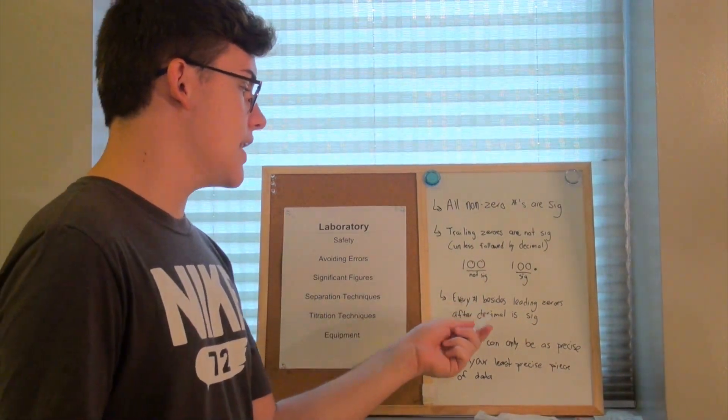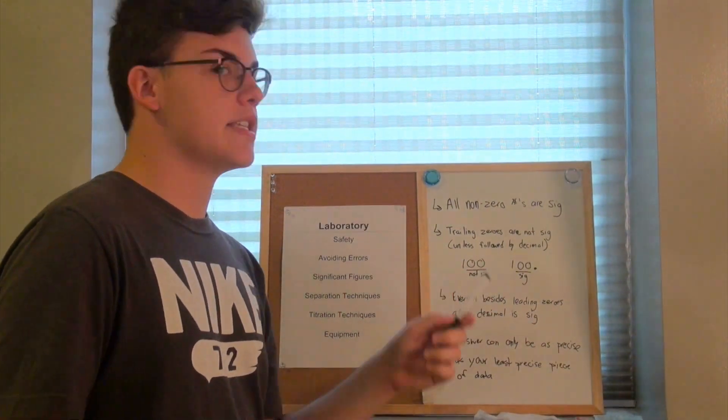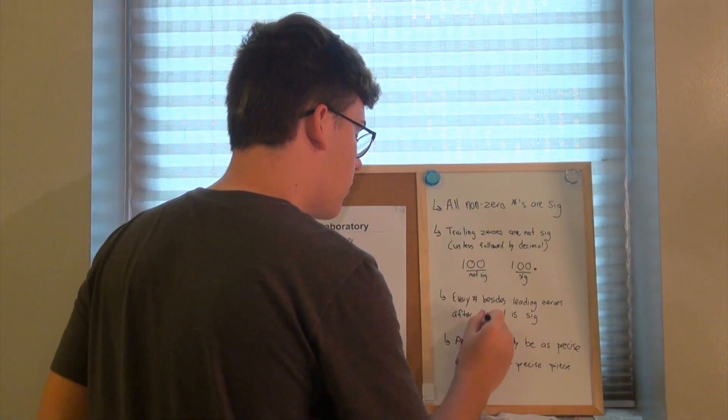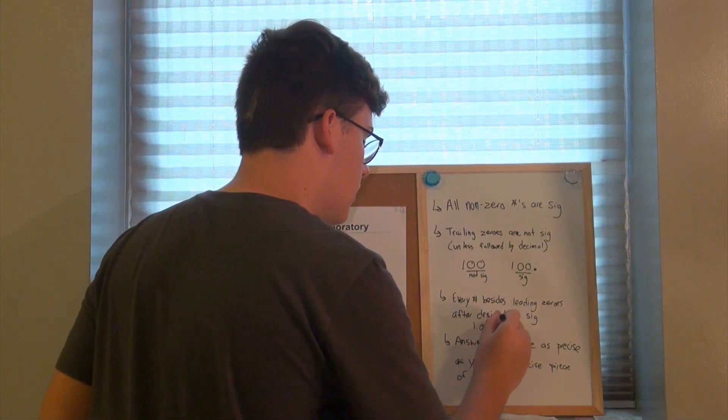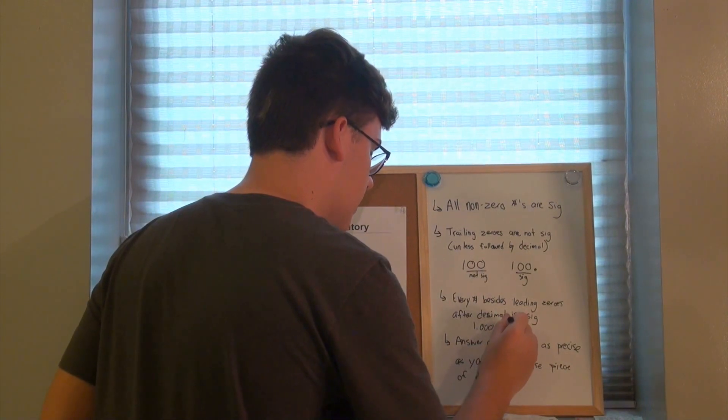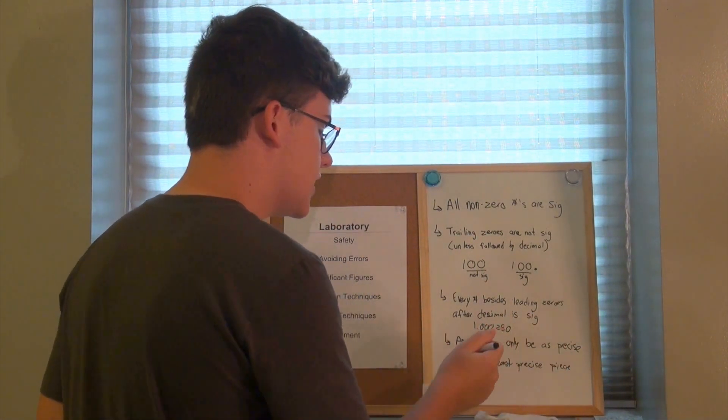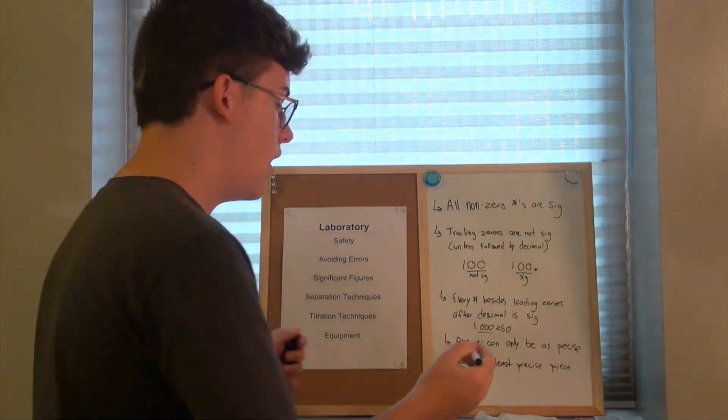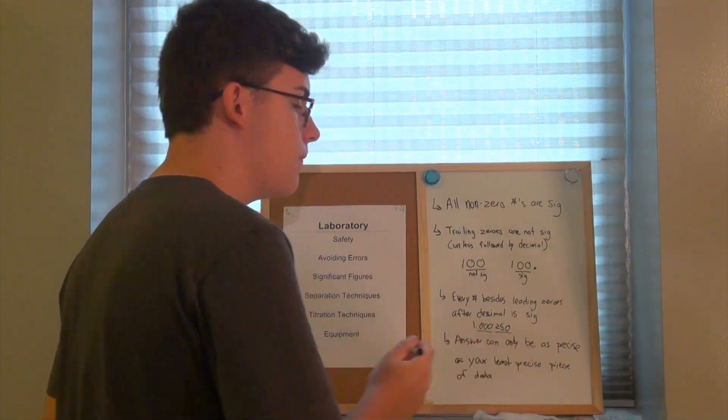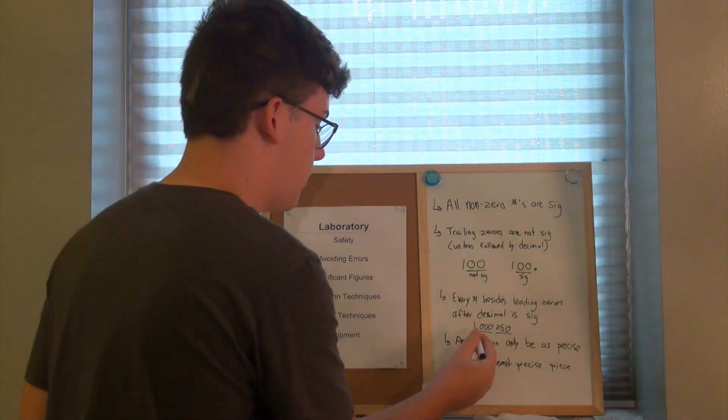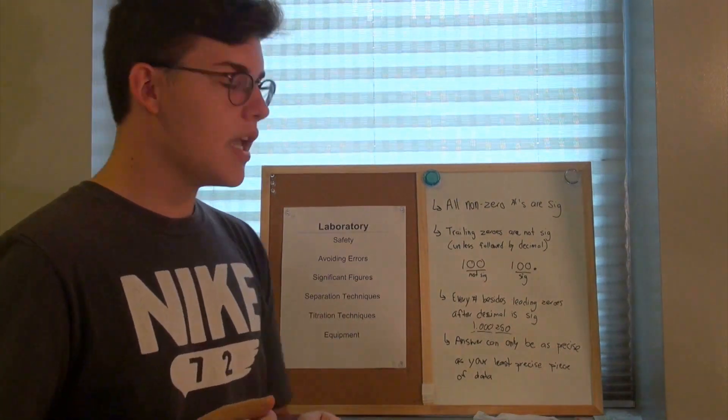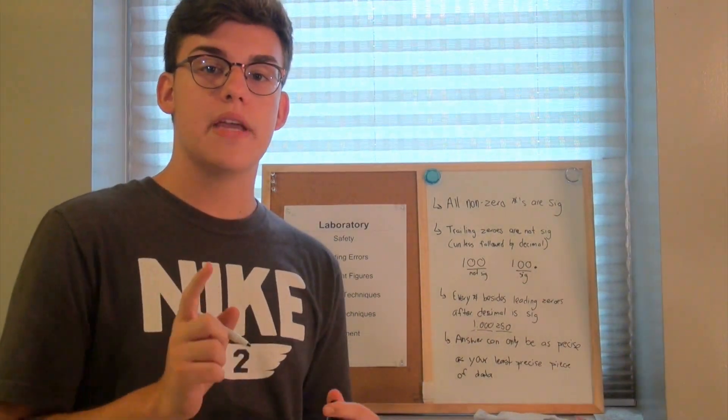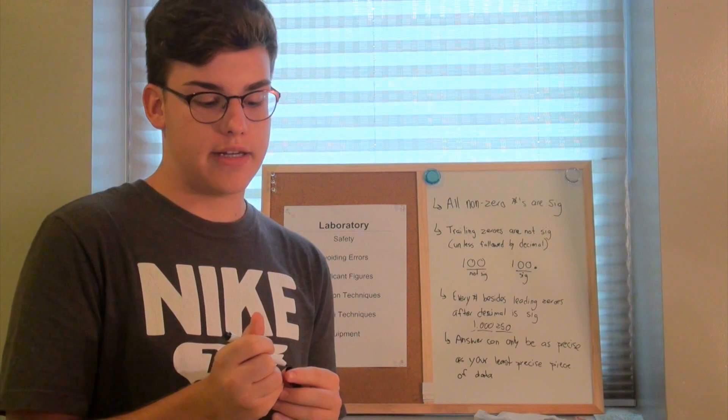Every number besides the leading zeros after a decimal is significant. So let's take the number 1.000250. The three leading zeros are not significant, while the 2, 5, and 0 are significant, including the one that is significant too. And remember that answers can only be as precise as your least precise piece of data.